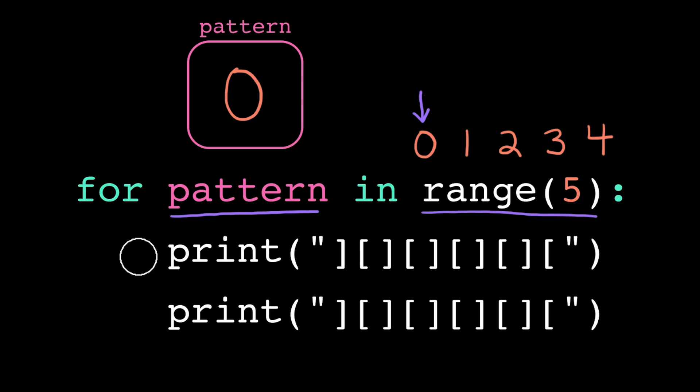When it gets to the bottom of the loop, as in the last line of code indented inside of it, it'll loop execution back to the top. Then it picks up the next value in the range and assigns that to the loop variable. So pattern now contains the value 1.